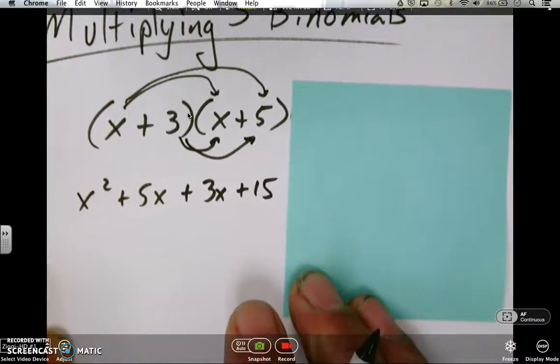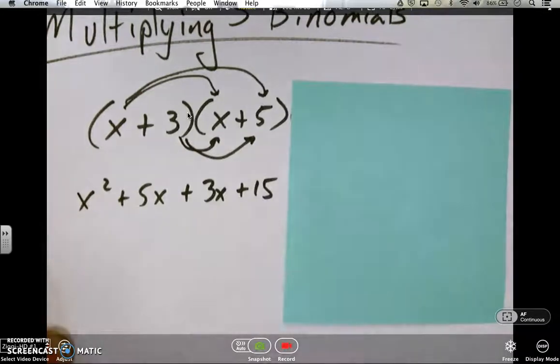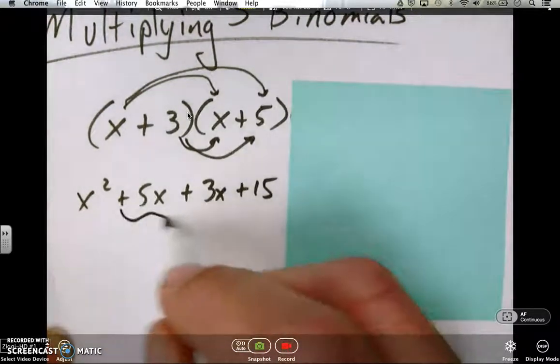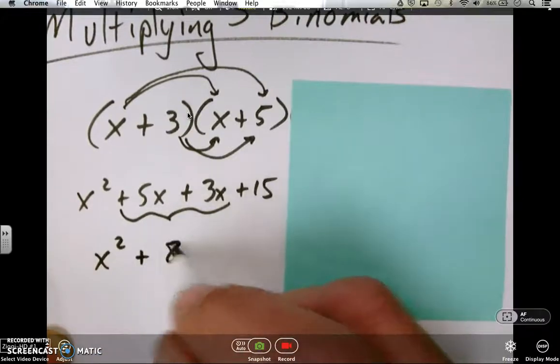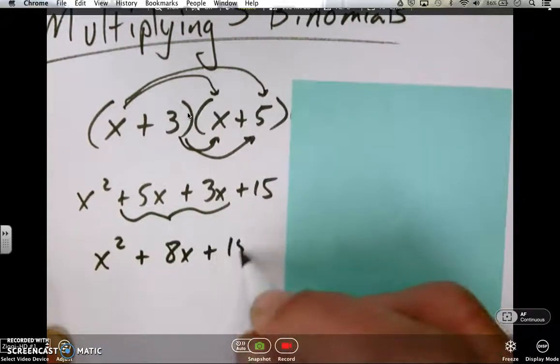Okay, now that's four things. Now we can actually simplify this a little bit. So these two things, both are x's, so we're going to have 5x plus 3x, 8x, and then plus 15.